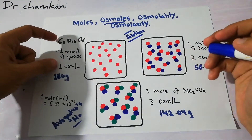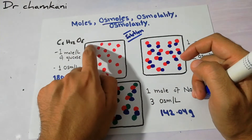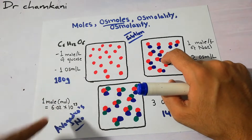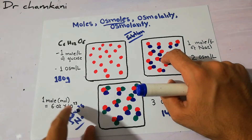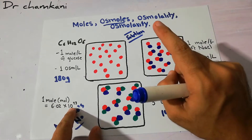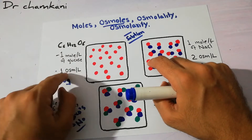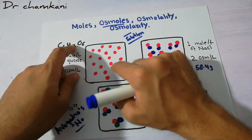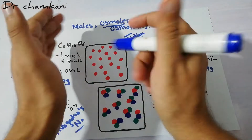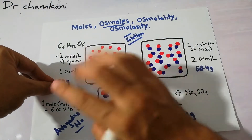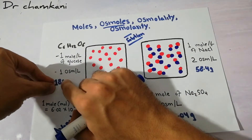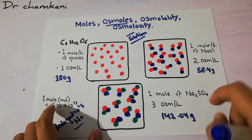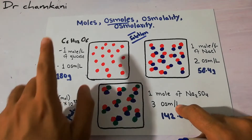If we talk about glucose, glucose is basically one particle — it is osmotically one active particle. So one mole of glucose will contain 6.02 × 10²³ osmotically active particles. Therefore, one mole of glucose is basically equal to one osmol, because glucose is just one particle. The mole is its weight which contains this many particles, but osmol simply means the active particles in a solution.